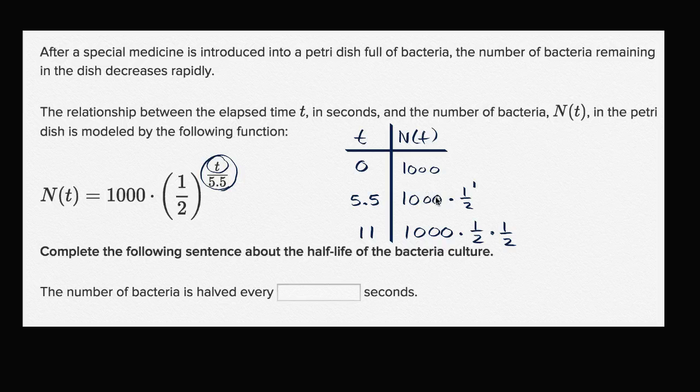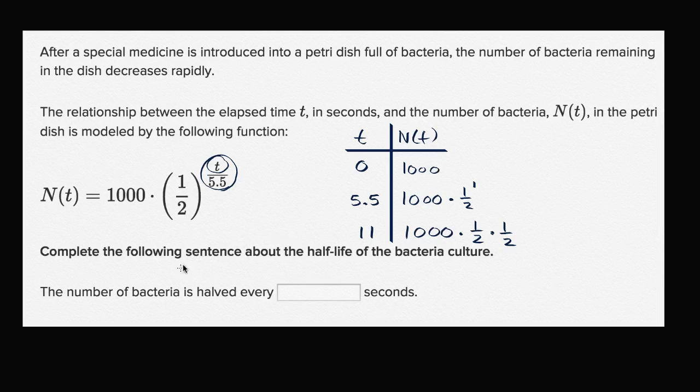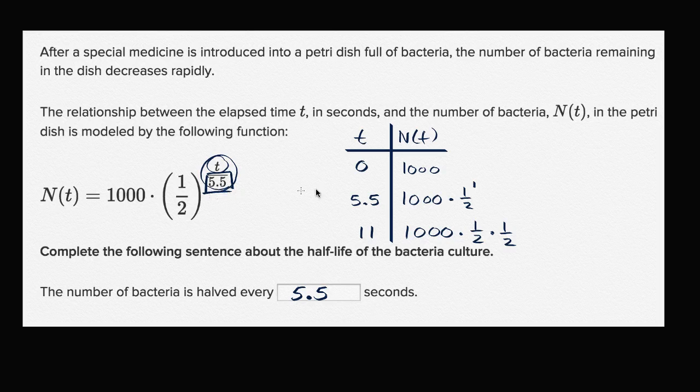So every five and a half seconds, we will essentially have half of the bacteria that we had five and a half seconds ago. So the number of bacteria is halved every 5.5 seconds. And you see it in the formula, in the function definition right over there, but it's nice to reason it through and really digest why it makes sense.